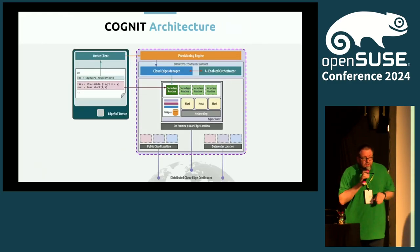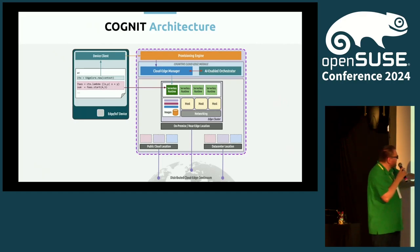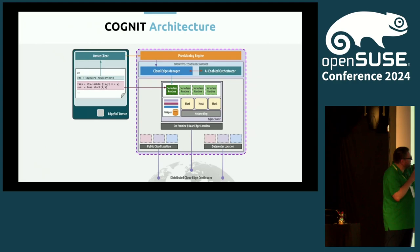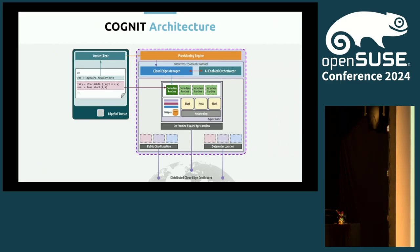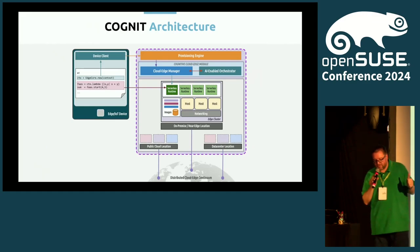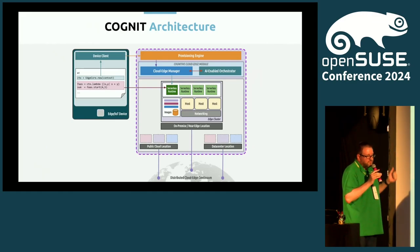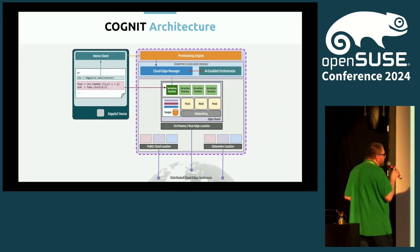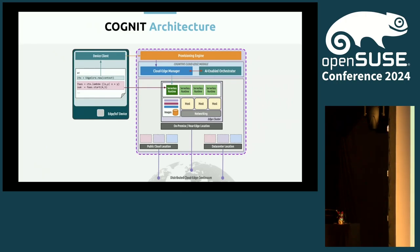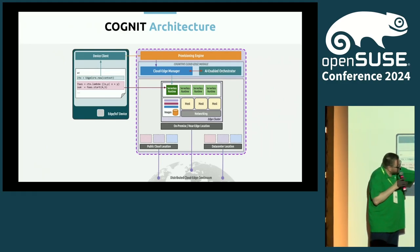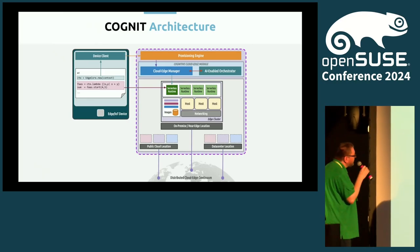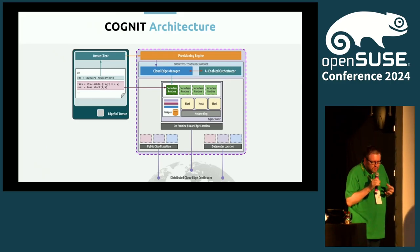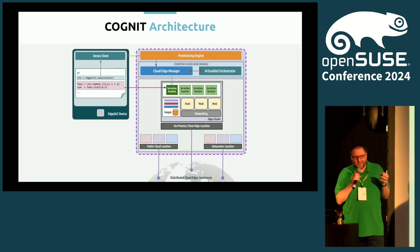Looking at the architecture diagram: the device client makes a function-as-a-service call to the serverless runtime. Initially, the device client goes to the provisioning engine requesting a serverless runtime provisioning. This goes through the cloud edge manager with the AI-enabled orchestrator to place computation on one of the nodes — shown in green because that's where OpenSUSE is. Requests also ask for a specific serverless runtime flavor.